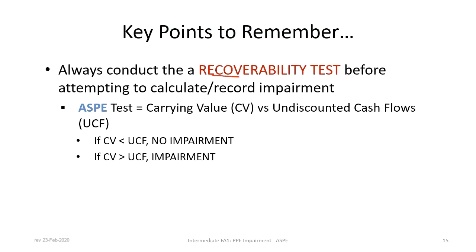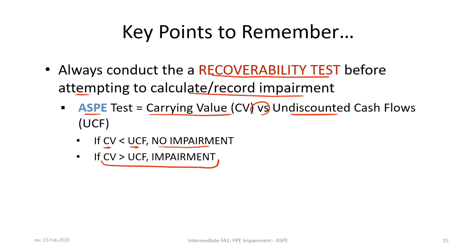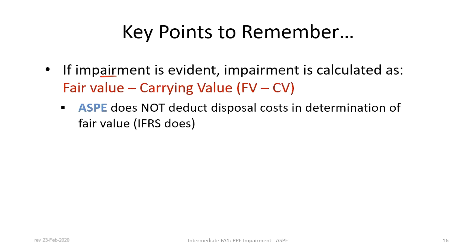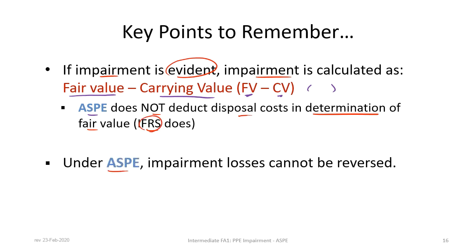Key points to remember: First, always conduct the recoverability test before calculating impairment — these are different steps. The ASPE recoverability test compares carrying value to undiscounted future cash flows: if CV < UCF, no impairment; if CV > UCF, impairment exists. Second, if impairment is evident, calculate it as Fair Value (FV) minus Carrying Value (CV) — a negative result represents a loss. Third, ASPE does not deduct disposal costs from fair value, whereas IFRS does. Finally, under ASPE, impairment losses cannot be reversed — once an asset is impaired, that write-down is permanent.